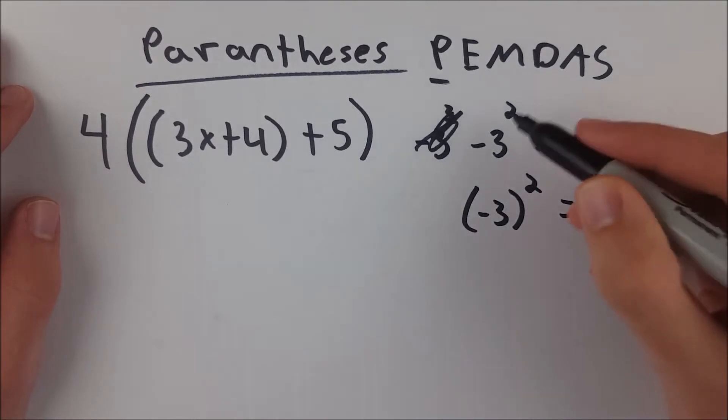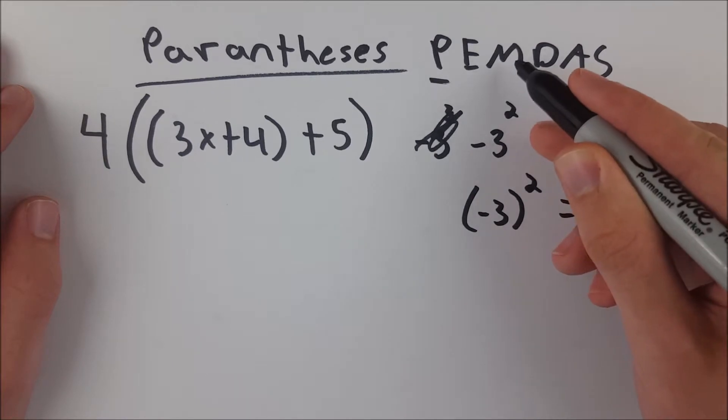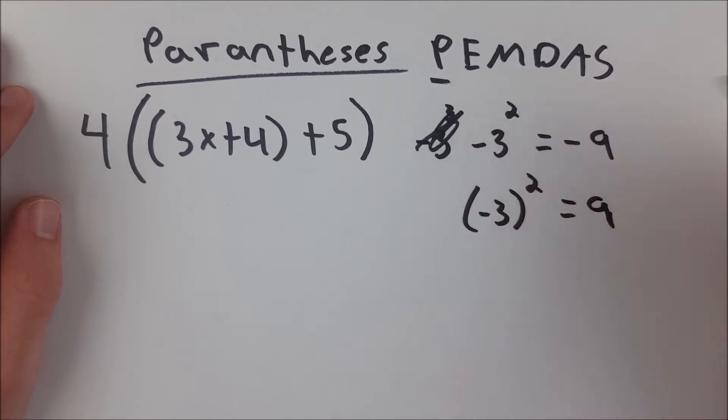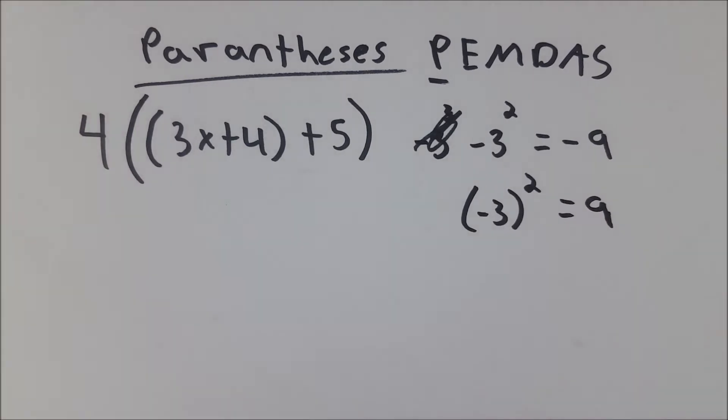And using the parentheses makes that very clear to the calculator what you want. Without the parentheses, it does exponents first, and then it does the multiplication of negative 1 times 3, thus giving you your negative 9.